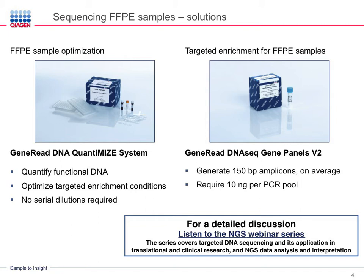The GeneRead DNA Seq Panels enable targeted DNA sequencing by multiplex PCR. Two features make these panels unique: they use small amplicons of 150 base pairs on average, and they require only 10 nanograms of DNA per PCR pool, which means that a two-pool panel will need 20 nanograms of DNA in total per sample. This is in contrast to hundreds of nanograms if other targeted enrichment technologies are used or whole exome sequencing is applied.